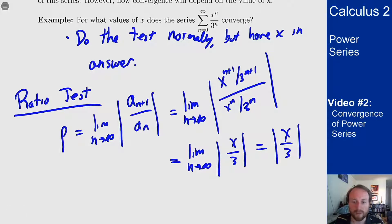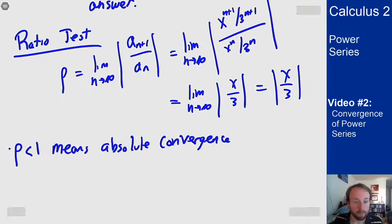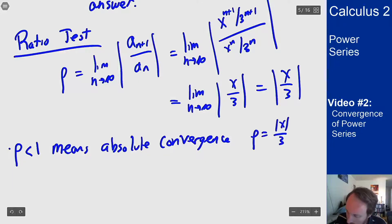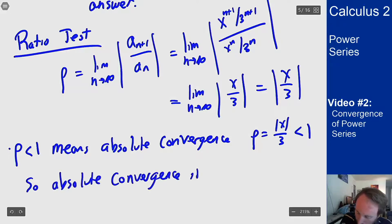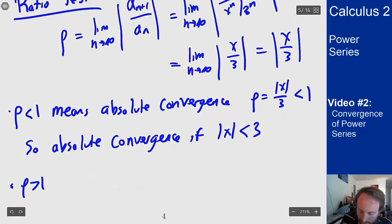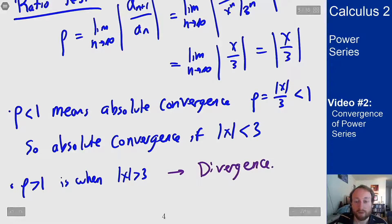Now when does my series converge? Well my series converges absolutely if rho is less than 1, but rho is absolute value of x over 3. This is less than 1 when the absolute value of x is less than 3. So absolute convergence if the absolute value of x is less than 3. Rho bigger than 1 is when the absolute value of x is bigger than 3 and this gets me divergence, but I still haven't dealt with all values of x.